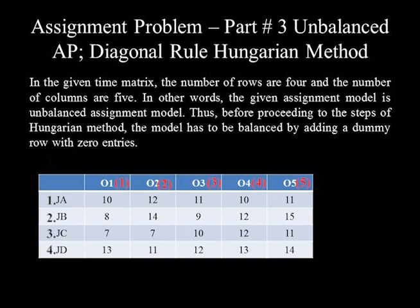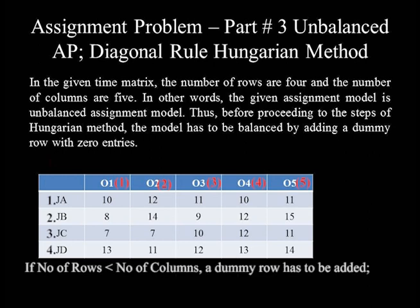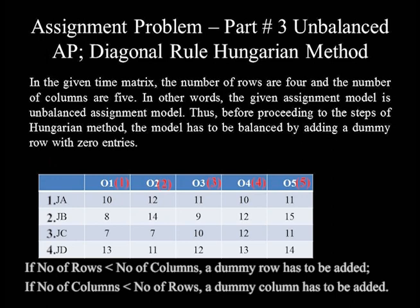Thus, before proceeding to the steps of the Hungarian method, the model has to be balanced by adding a dummy row with 0 values. A decision to add a dummy row or a dummy column depends on the number of rows and columns in the given matrix. A dummy is added to the one which is less in number — if the number of rows is less than the number of columns, a dummy row has to be added. On the other hand, if the number of columns is less than the number of rows, a dummy column has to be added. The number of dummy rows or columns to be added equals the number by which that row or column is less, in order to restore balance.